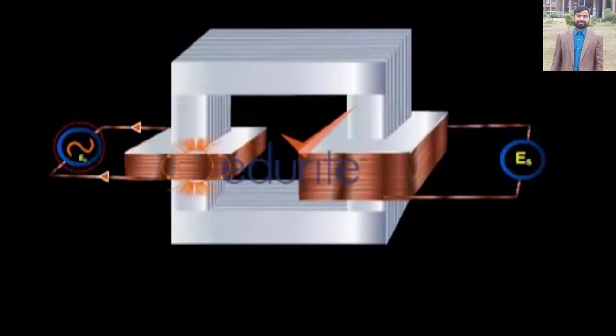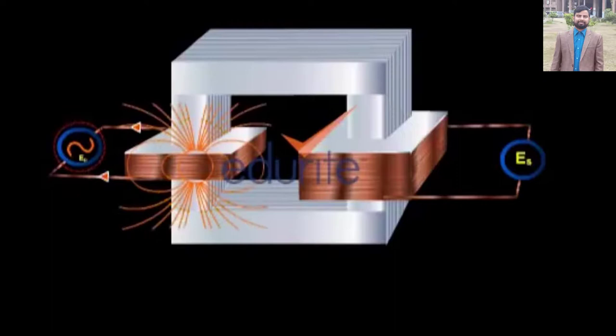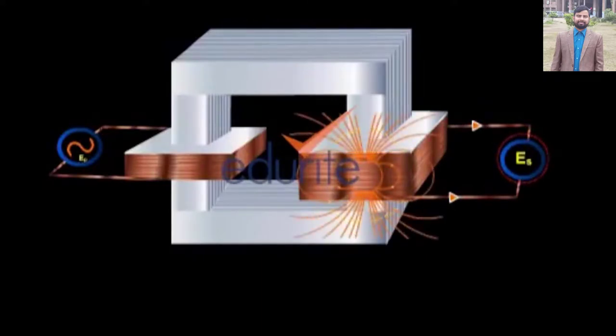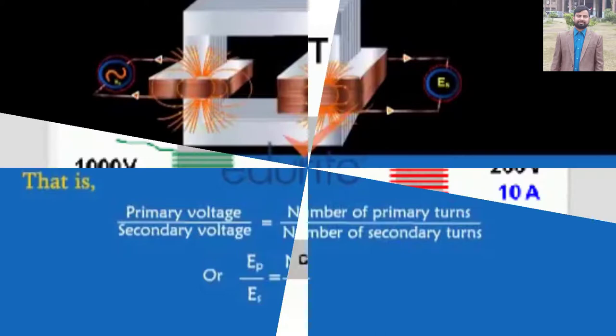One important thing to note is that this trick works only if the electric current is fluctuating in some way. In other words, you have to use a type of constantly reversing electricity called alternating current, AC, with a transformer. Transformers do not work with direct current, DC, where a steady current constantly flows in the same direction.